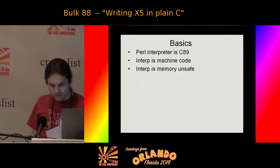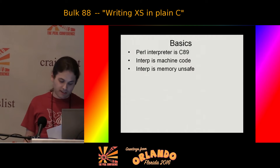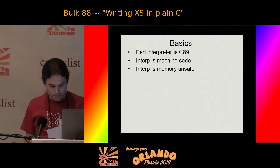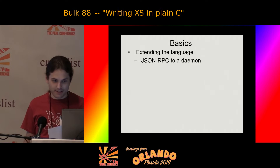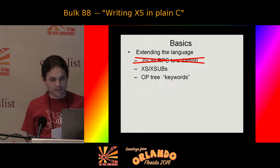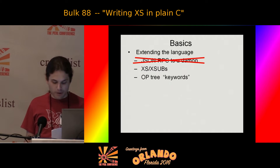The Perl interpreter is written in C89. It's a large pile of machine code and it's memory unsafe. The Perl interpreter is not written in Java. There's basically one way to escape the Perl interpreter. Either you have to use XSubs, or you have to use keywords. XSubs can be monkey patched, but keywords are permanent.